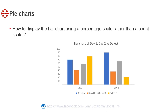However, there are more defects for day one in general, so it's hard to tell if the percentage of defect D in day one is higher than in day two. So how do we display the chart using a percentage scale rather than a count scale?